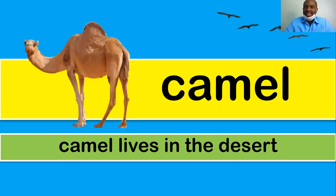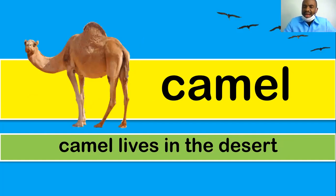Camel — a camel lives in the desert, a very hot and dry area. Camels can survive in very hot areas. If you go to Dubai, you see so many camels in the desert.